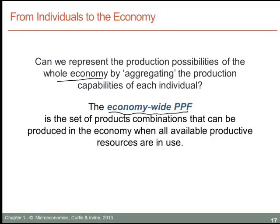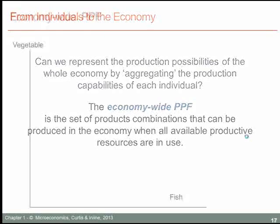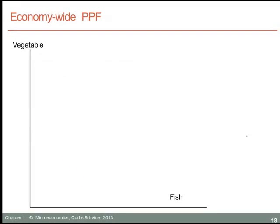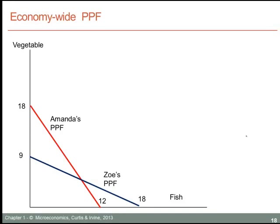Just as we defined the individual production possibility frontier as the combinations of two goods that an individual could produce by using all of her time, the economy-wide production possibility frontier is defined similarly. It is the set of output combinations that could be produced in the economy when all available productive resources are in use.